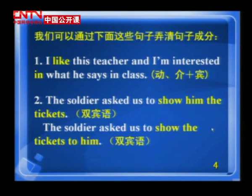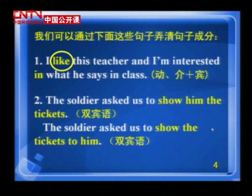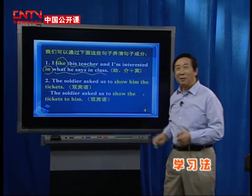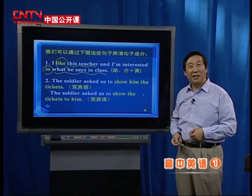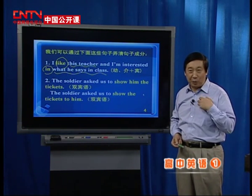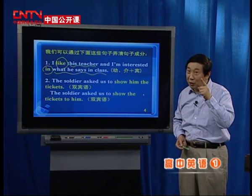通过口诀，动词介词接宾语，现在举例：I like this teacher, and I'm interested in what he says in class. 哪个是动词？like。它后边的是宾语。介词后边接的是一个句子，那么这个句子叫什么从句？动词之后接宾语，既然接的是宾语，那就说明它是宾语从句。